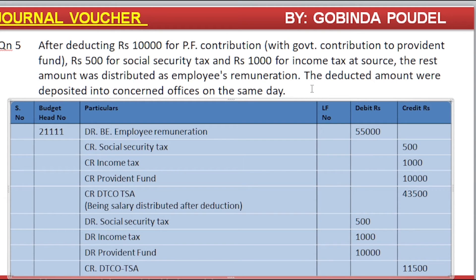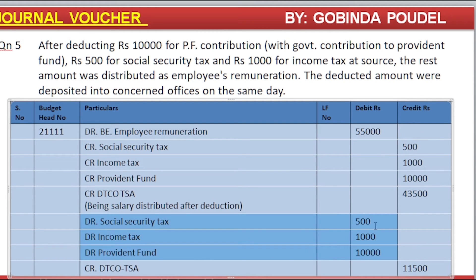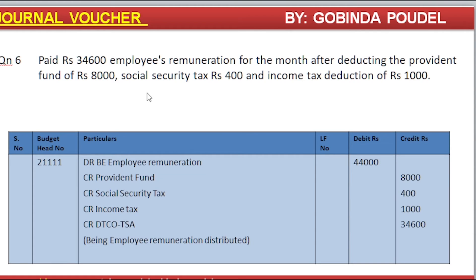The deducted amount was deposited into the concerned office on the same day. The next question: Paid Rs. 34,600 for the month after deducting the Provident Fund of Rs. 8,000, Social Security Tax Rs. 400, and Income Tax deduction of Rs. 1,000.